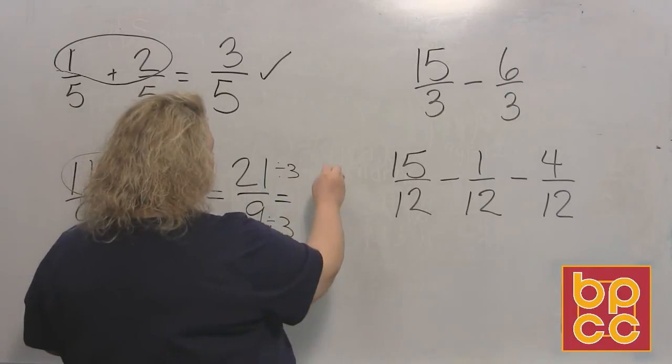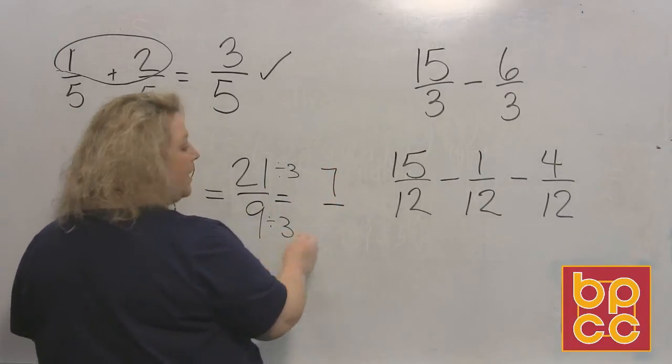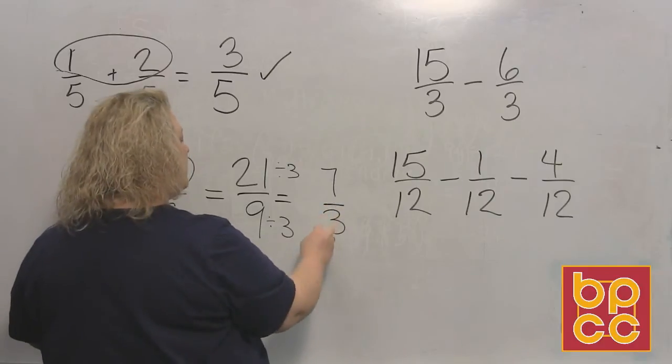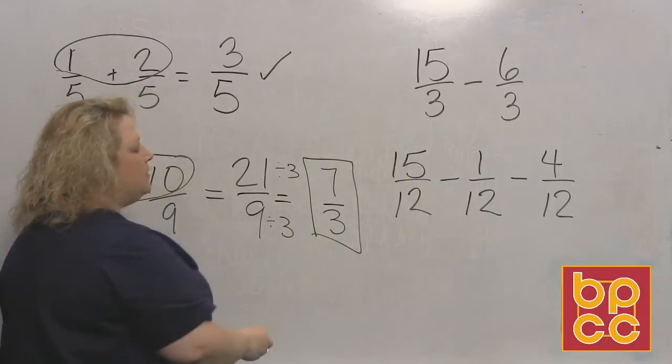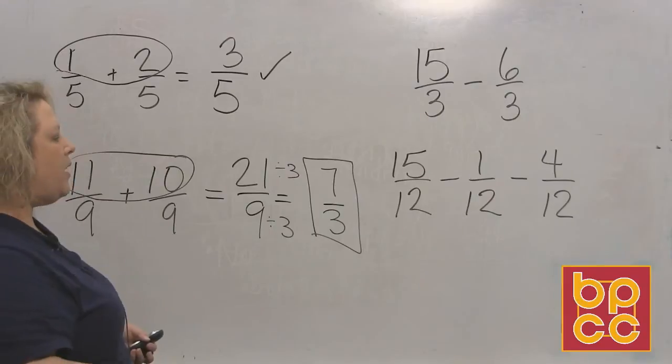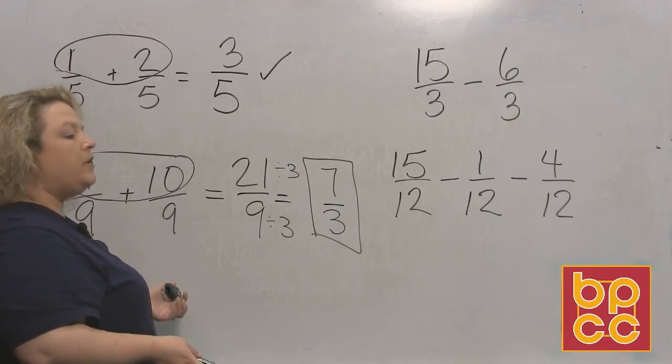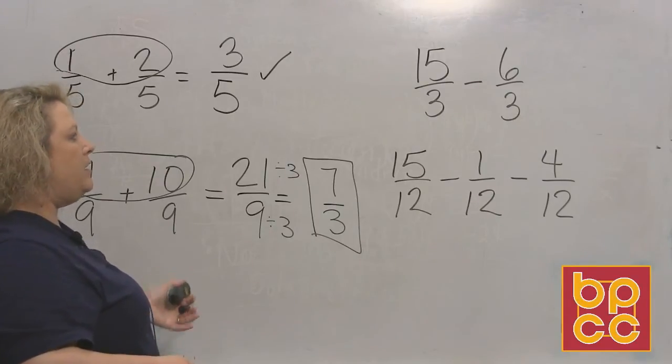So 21 divided by 3 is 7, nine divided by 3 is 3. So your final answer is 7/3. Now you can leave it like that as an improper fraction, or if you really want to change it to a mixed number you can, but you don't have to.